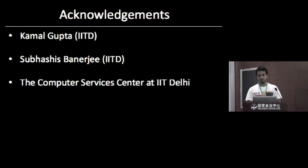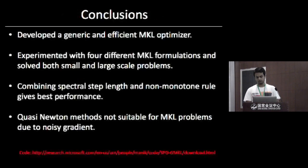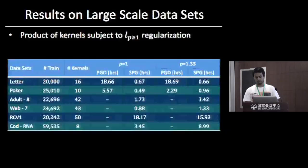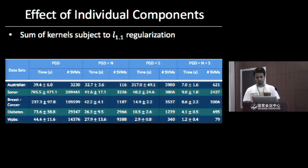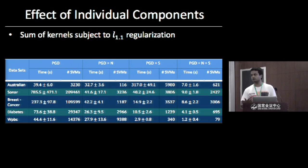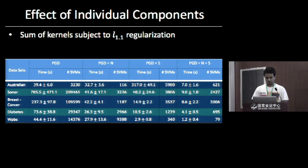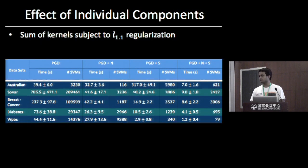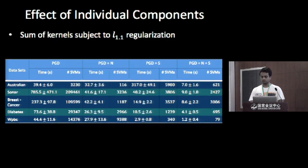Q&A: A question was raised about the experiments comparing PGD+N and PGD+S — for the first dataset PGD+N is significantly better than PGD+S, but for other cases PGD+S seems more effective. The speaker responded that second-order information (plus S) is generally better on most datasets, but for datasets like Australian it doesn't do as well, without a specific reason identified. The speaker acknowledged it may just depend on the data.